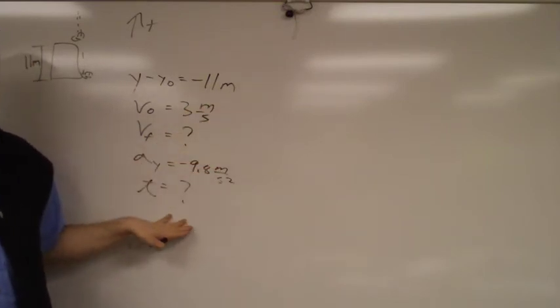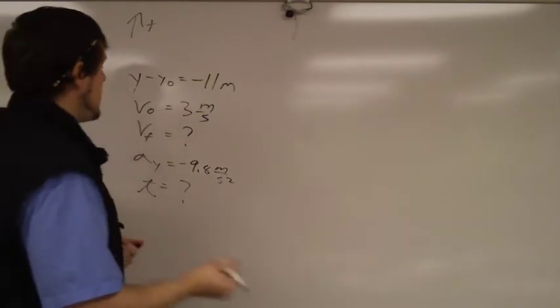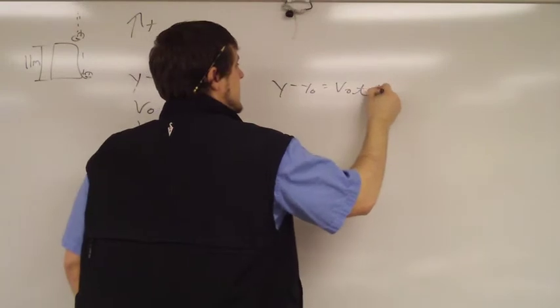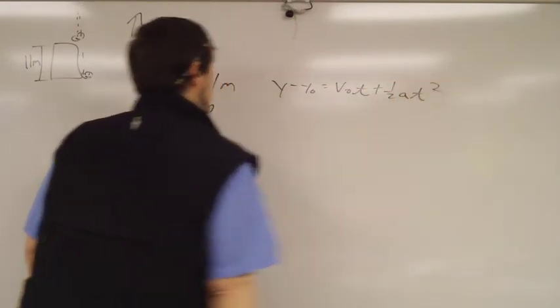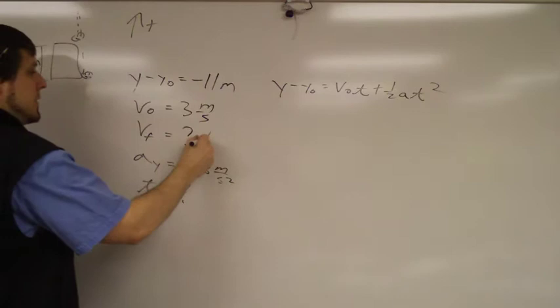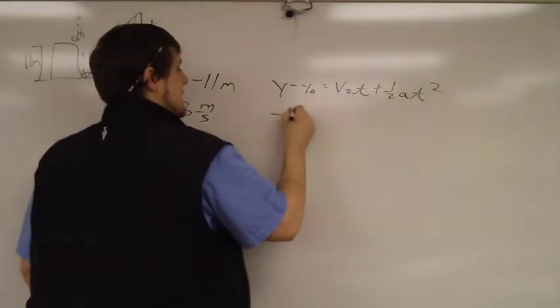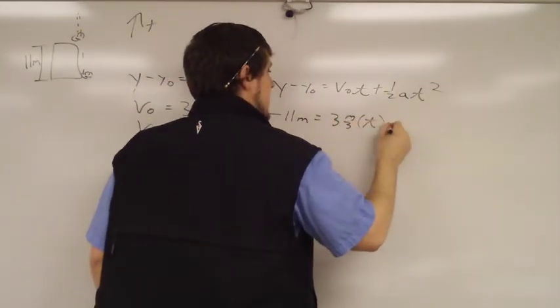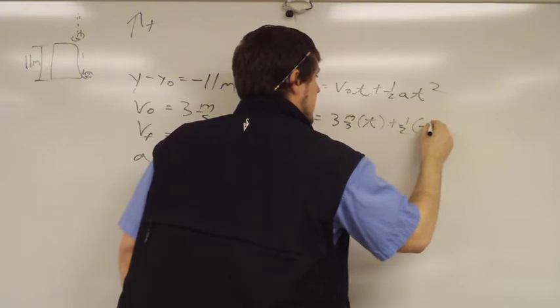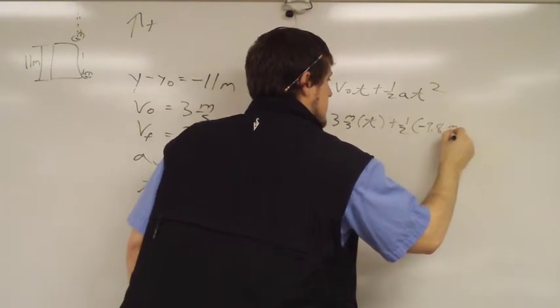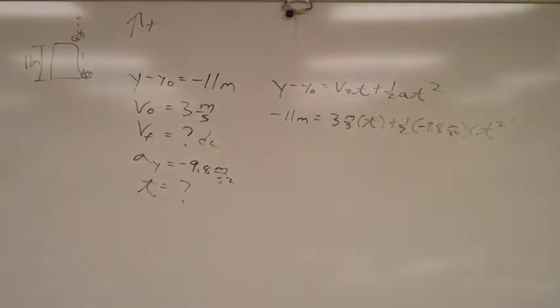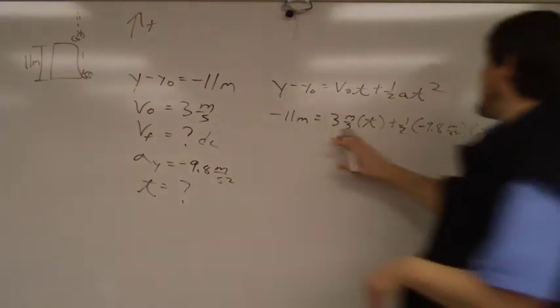All right, so now I pick my equation: y minus y naught equals v naught t plus one half a t squared. Because which one don't I care about for this first part? V final. So I have negative 11 meters equals three meters per second times t, plus one half times negative 9.8 meters per second squared times t squared.